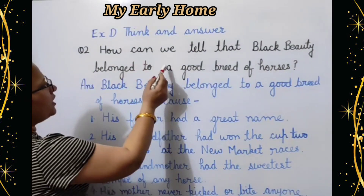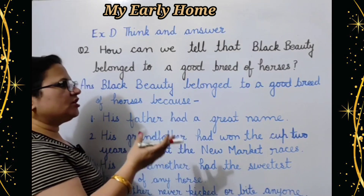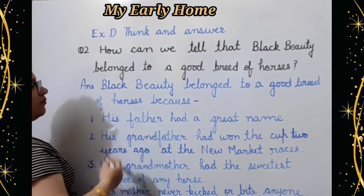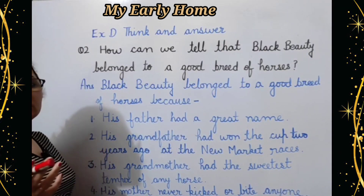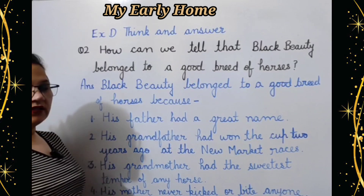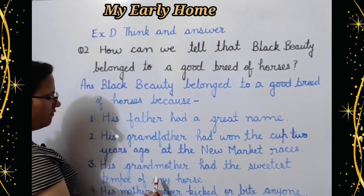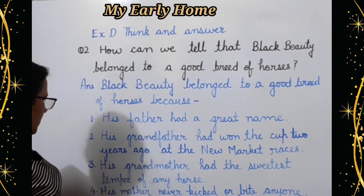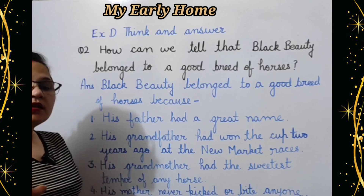Question number two: How can we tell that Black Beauty belonged to a good breed of horses? Hum kaise keh sakte hai ki Black Beauty achhi nasl ke ghodo se sambandh rakta tha? Answer: Black Beauty belonged to a good breed because his father had a great name, his grandfather had won the cup two years ago at the Newmarket races, his grandmother had the sweetest temper of any horse, and his mother never kicked or bit anyone.